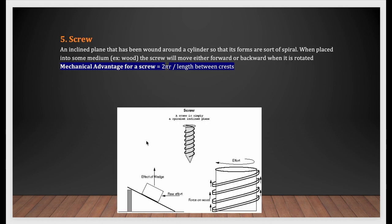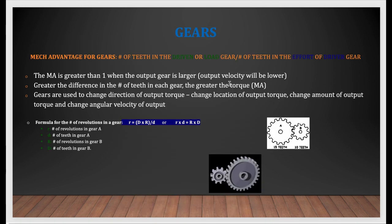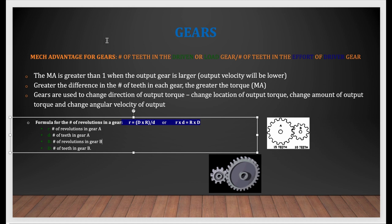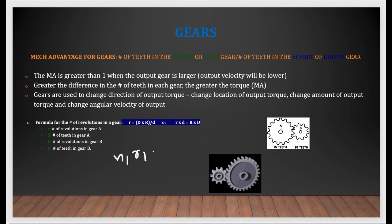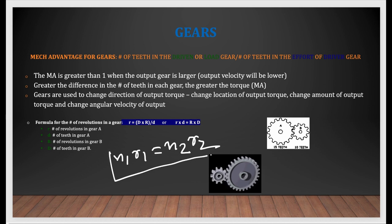The next thing is the screw. The mechanical advantage of a screw equals two pi r times the length between crests. You can see in the diagram what is meant by crest. The next important section is gears. The gear formula is N1 × R1 = N2 × R2, where N is the number of teeth and R is the rotation speed.